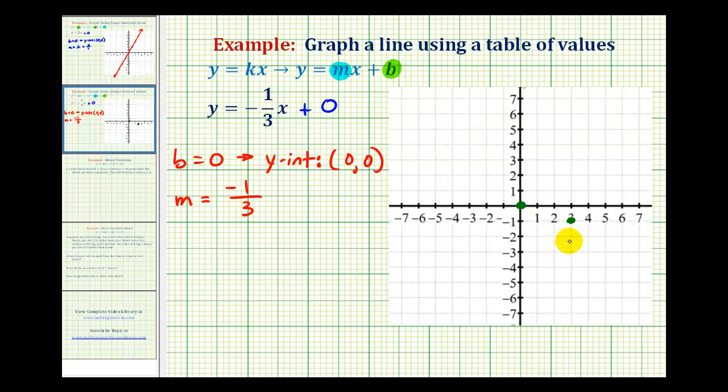And of course, we can do that again, down 1, right 3. So the graph of y equals negative 1/3x is a line passing through these three points with a y intercept at the origin. It would look something like this.